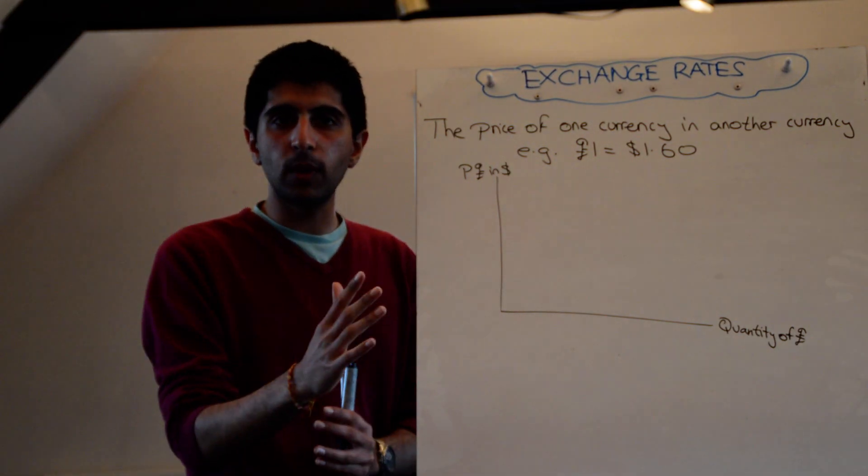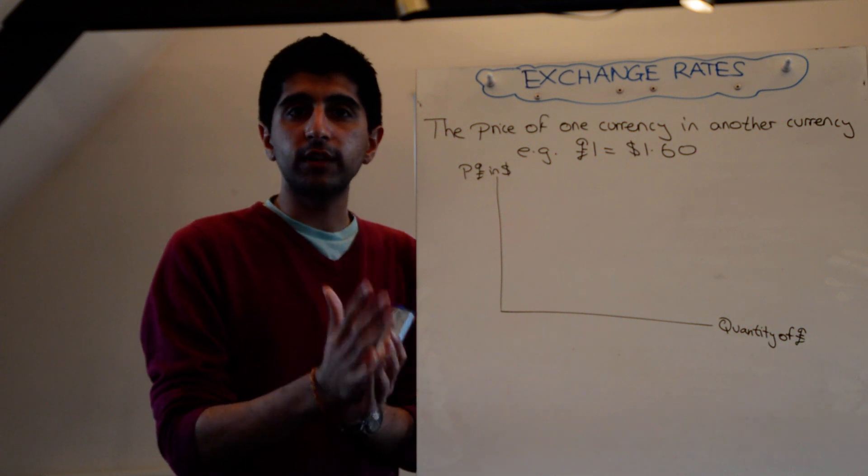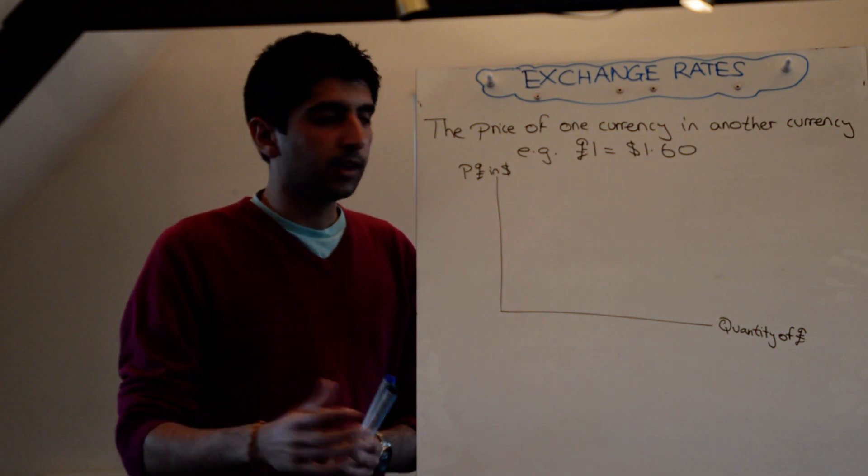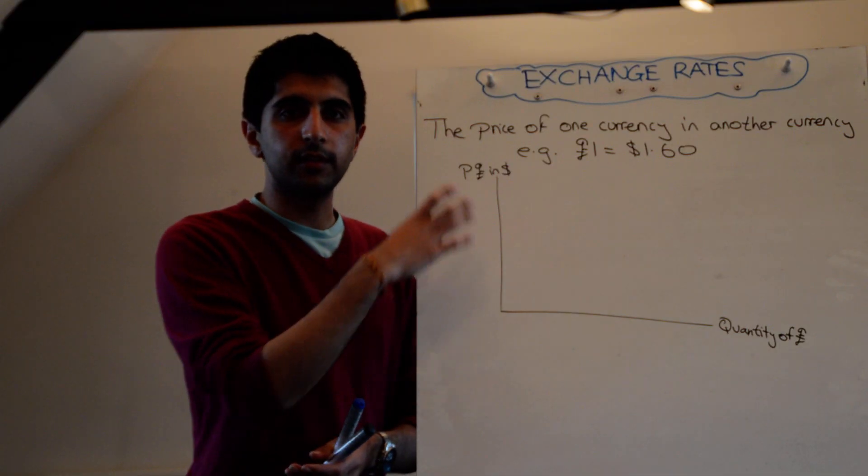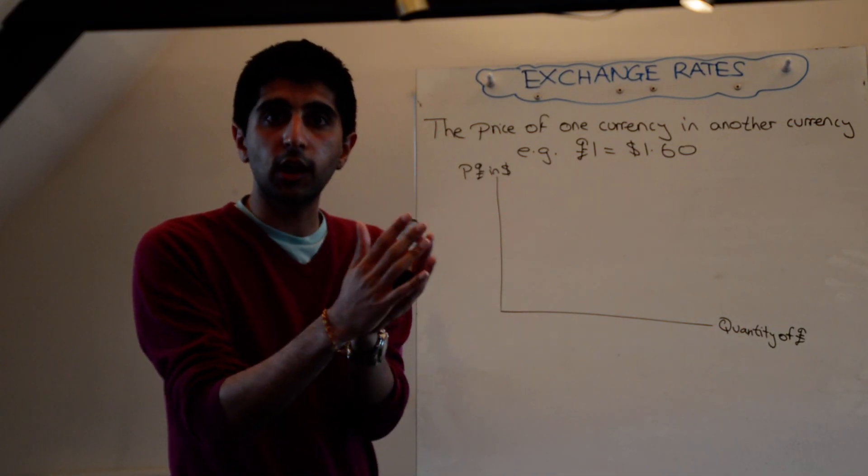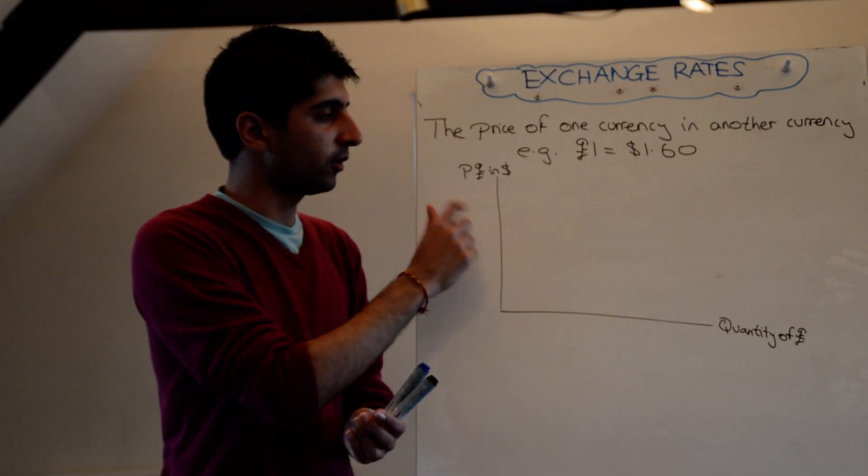So anytime in an example situation, they've told you what exchange rate you're determining, in what currency, then you have to use those currencies on the y-axis. The price of whatever currency you're trying to work out, the exchange rate you're trying to work out, in the currency that they're giving you.